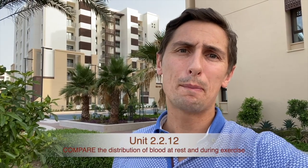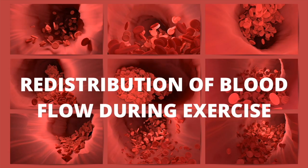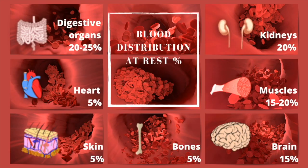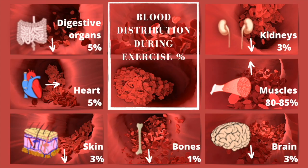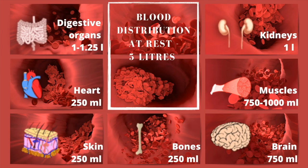Next we need to compare blood distribution at rest and during exercise. Distribution of blood flow can be categorised into percentages and actual figures. At rest the distribution is mixed: approximately 20% to muscles, 15% to the brain, 25% to digestive organs, and 20% to kidneys — the body prioritises a range of organs. During exercise this changes dramatically: 80 to 85% of blood flow goes to the muscles, with reductions to the digestive organs, kidneys, brain, bones, and skin.